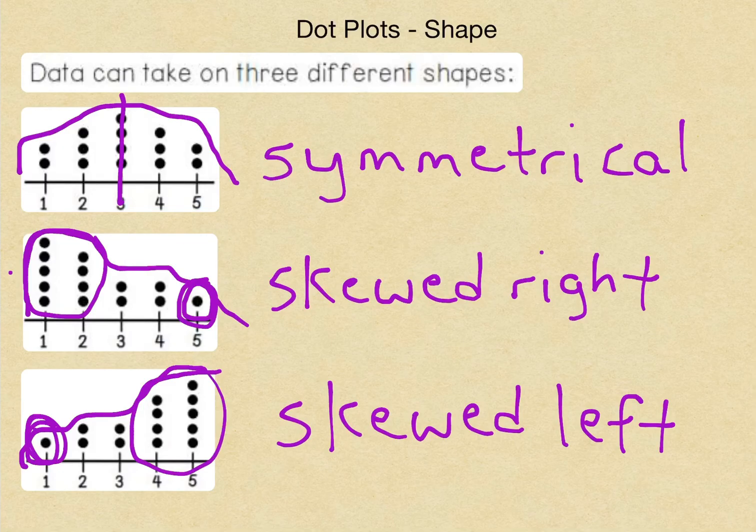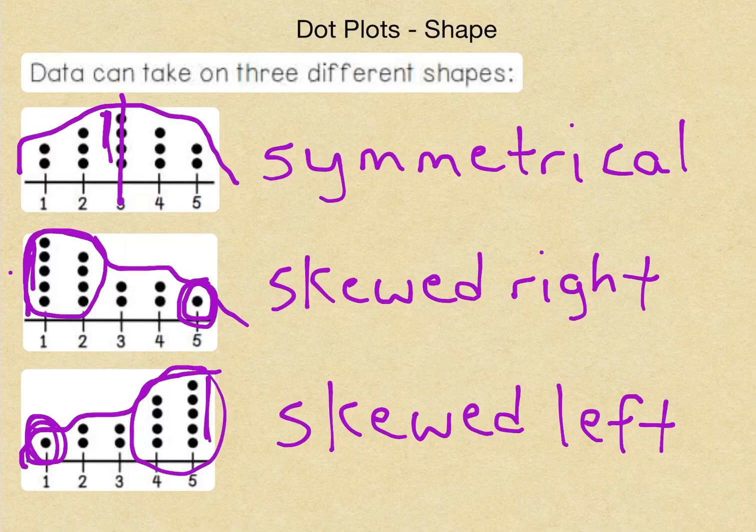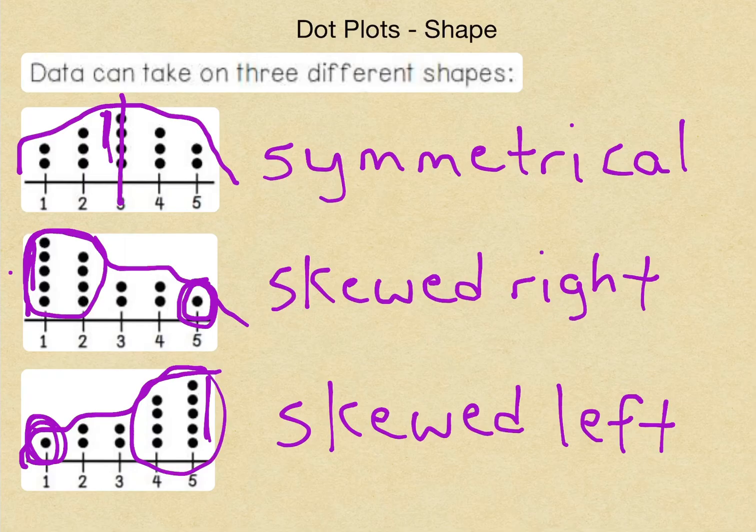And it has a tail on that side. And we can also see in this data, we have one column that may be higher than the others like this one, this one, this one. We can call those peaks. And we can also call these groups of points clusters as well. Now, the way the data is shaped can actually affect our measures of center more than anything else. So we're going to look at those next.